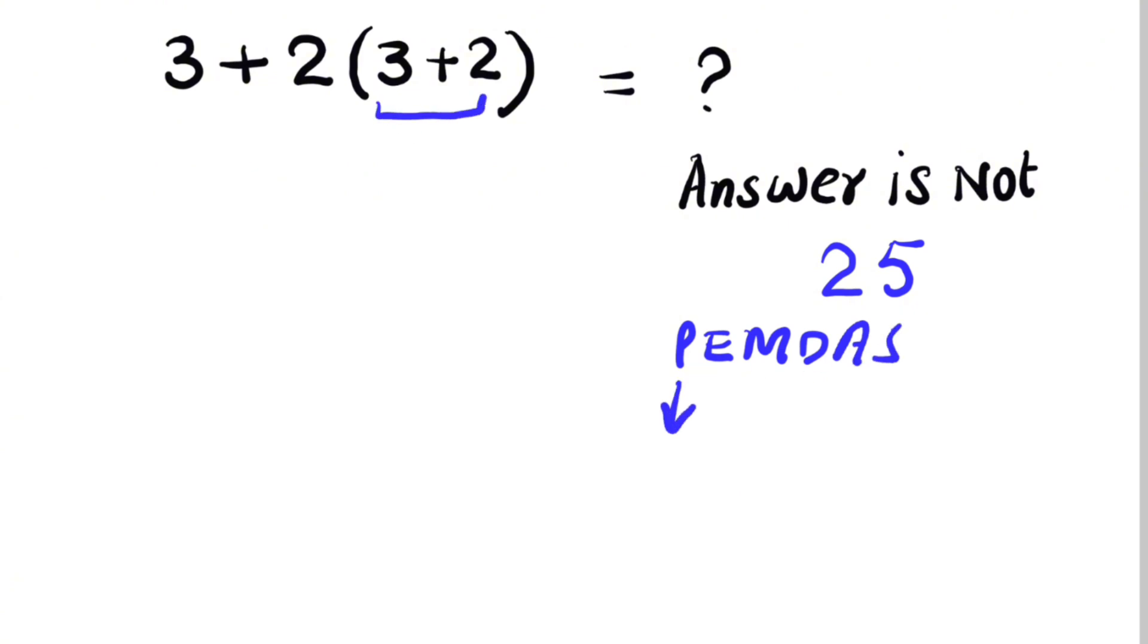So parentheses is here. We will get 3 plus 2 times, parentheses have 3 plus 2 which will be equal to 5.